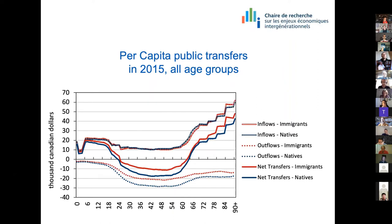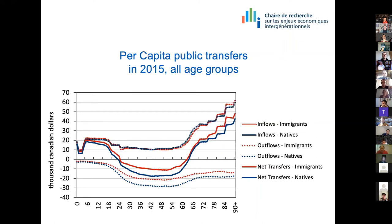Looking at per capita age profiles of public transfers for immigrants versus natives: for inflows, it's pretty similar per capita, though we see some differences especially after age 60, mainly explained by public pensions that are annual for natives. The big difference is in public transfer outflows — at each age, natives contribute more per capita than immigrants. The difference at young ages is due to value-added taxes — tax on consumption.